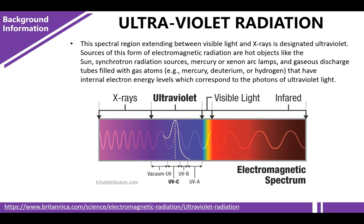This is Johann Wilhelm Ritter, and this is an example of UV light from a fluorescent bulb. The spectral region extending between visible light and X-rays is designated ultraviolet. Sources of this form of electromagnetic radiation are hot objects like the Sun, synchrotron radiation sources, mercury or xenon arc lamps, and gaseous discharge tubes filled with gas atoms such as mercury, deuterium, or hydrogen.